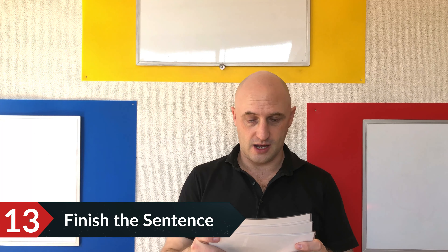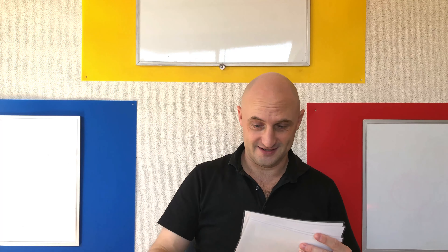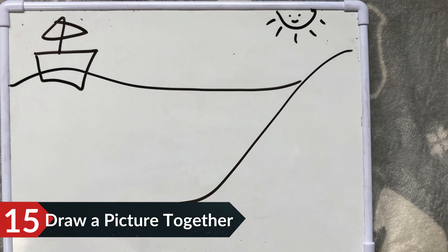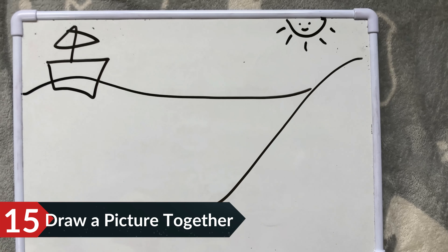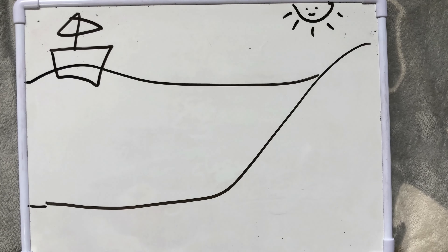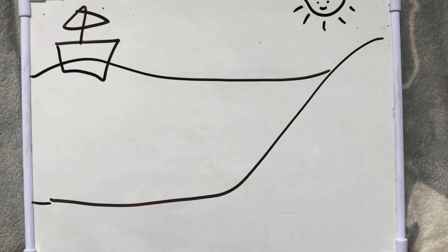Spider. Hi there. Number fifteen: say a sentence with a word missing. I went to the restaurant and I ate a... Pizza. Yes. Number sixteen: tell me some animals that live in the sea. Dolphin. Can you tell me some other animals? I can't draw a dolphin. Octopus.